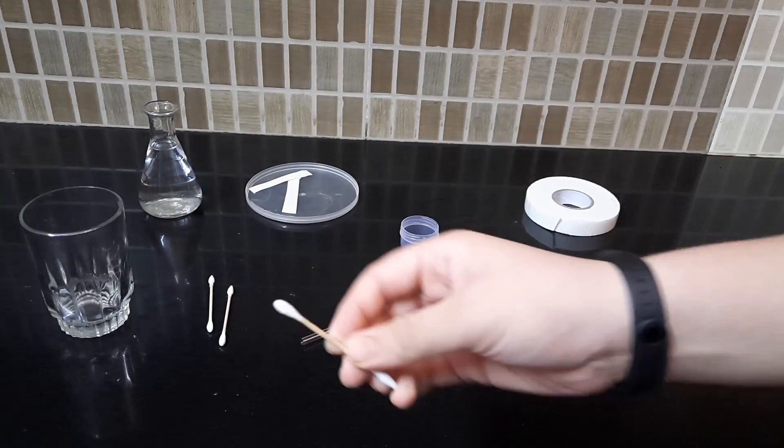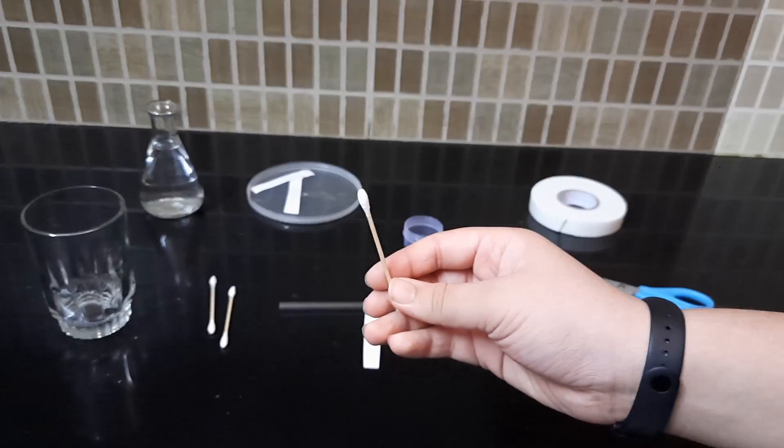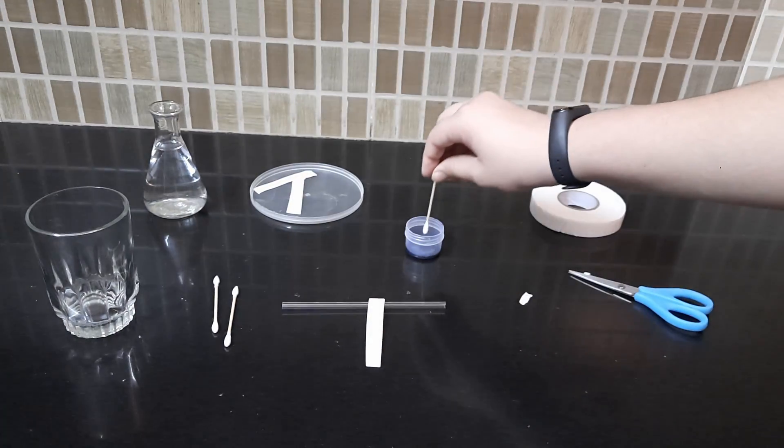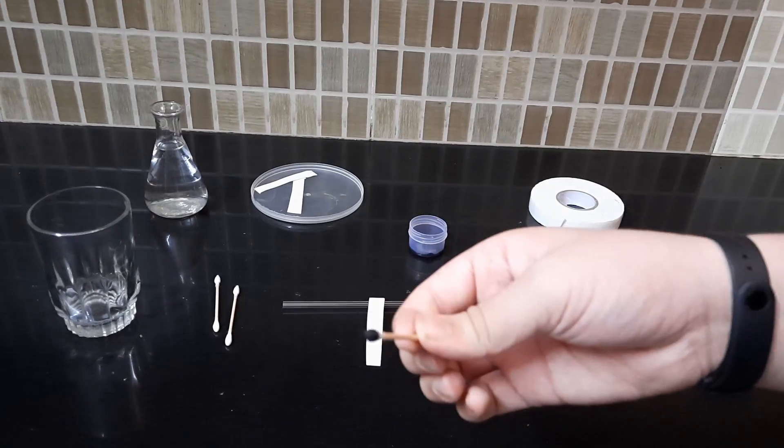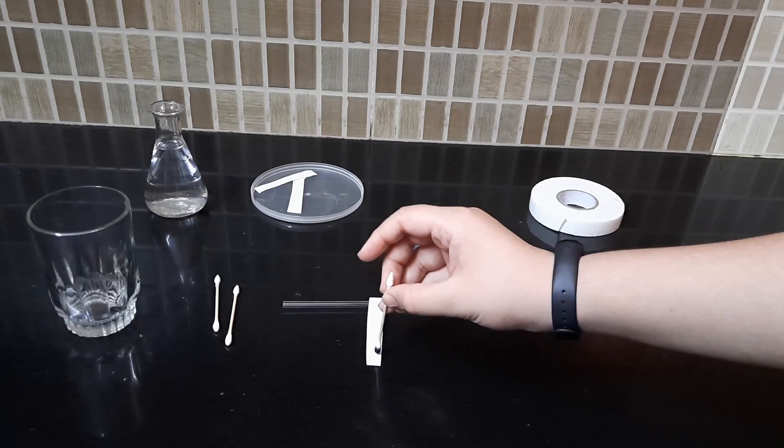Take the earbud and dip it inside the black ink. Using the earbud, make a dot on the chromatography paper.